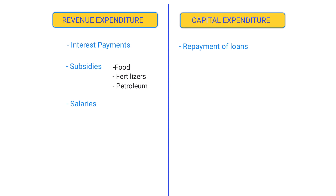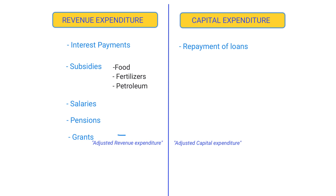With the 7th Pay Commission, the salaries component of revenue expenditure has shown an increase. Another major component is pensions that the government pays to its employees. Next are grants given by the central government to state governments and union territories — these are generally considered under revenue expenditure. However, a part of these grants is also used for capital creation, giving rise to the terms 'adjusted revenue expenditure' and 'adjusted capital expenditure,' where the capital-creation portion is subtracted from revenue and added to capital expenditure.